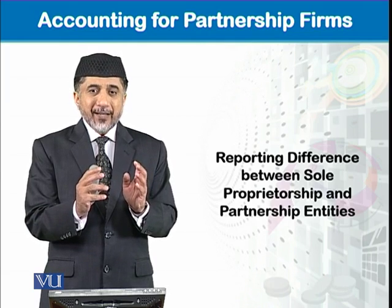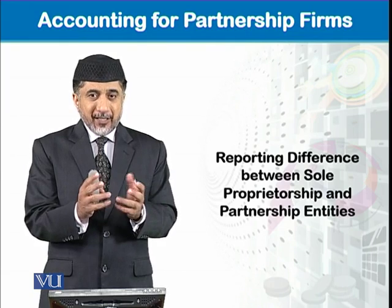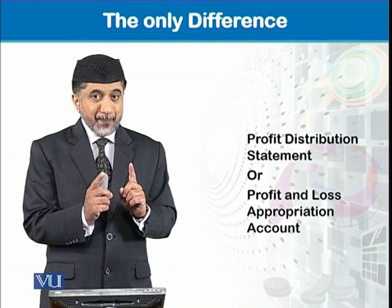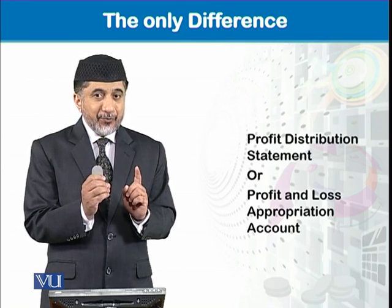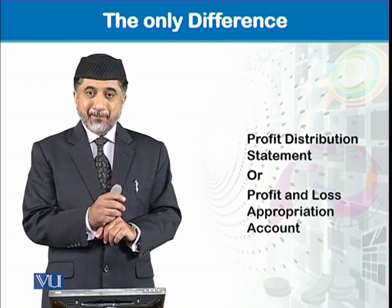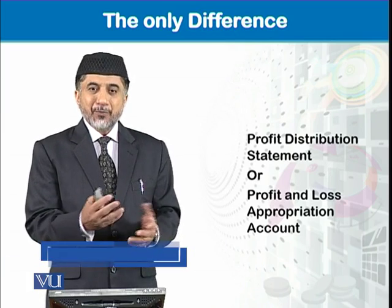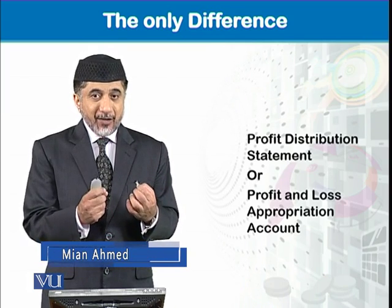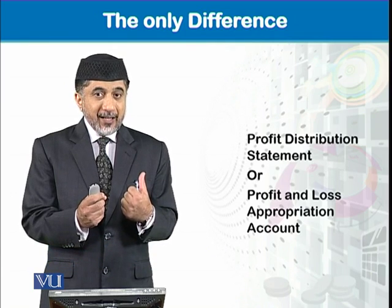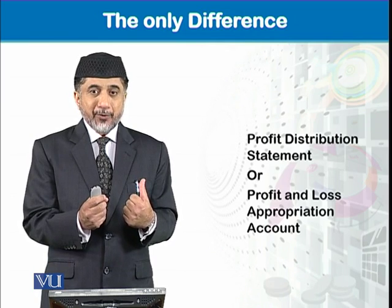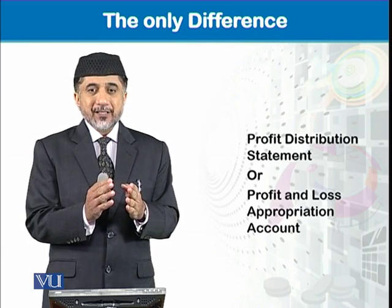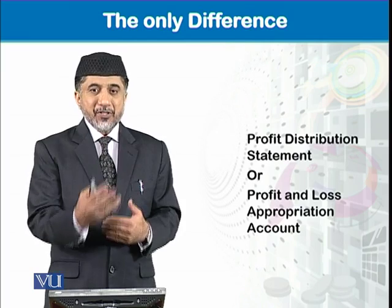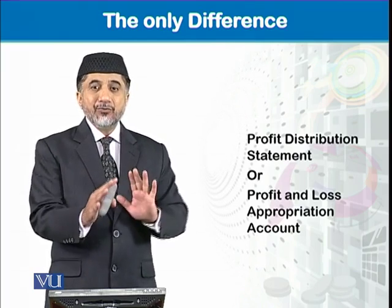This module is about discussing that very difference. That difference is the preparation of the profit distribution statement, which is also known as the Profit and Loss Appropriation Account. This is the only difference between the accounting system learned under sole proprietorship and the one we are going to learn under partnership. The rest of the accounting remains the same.